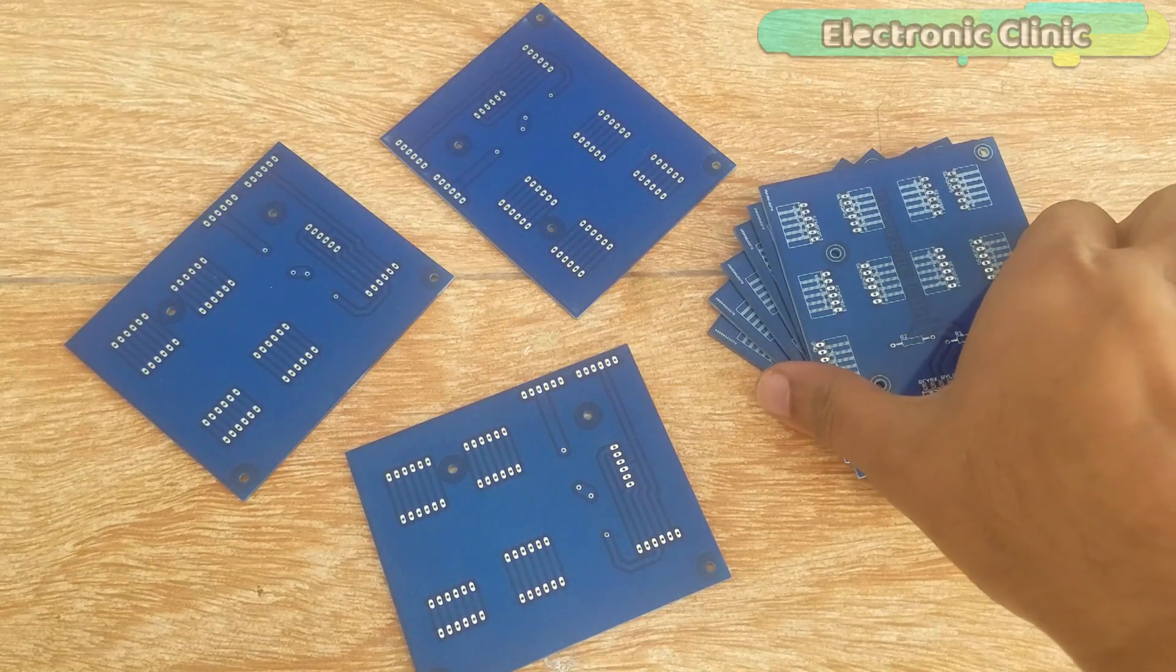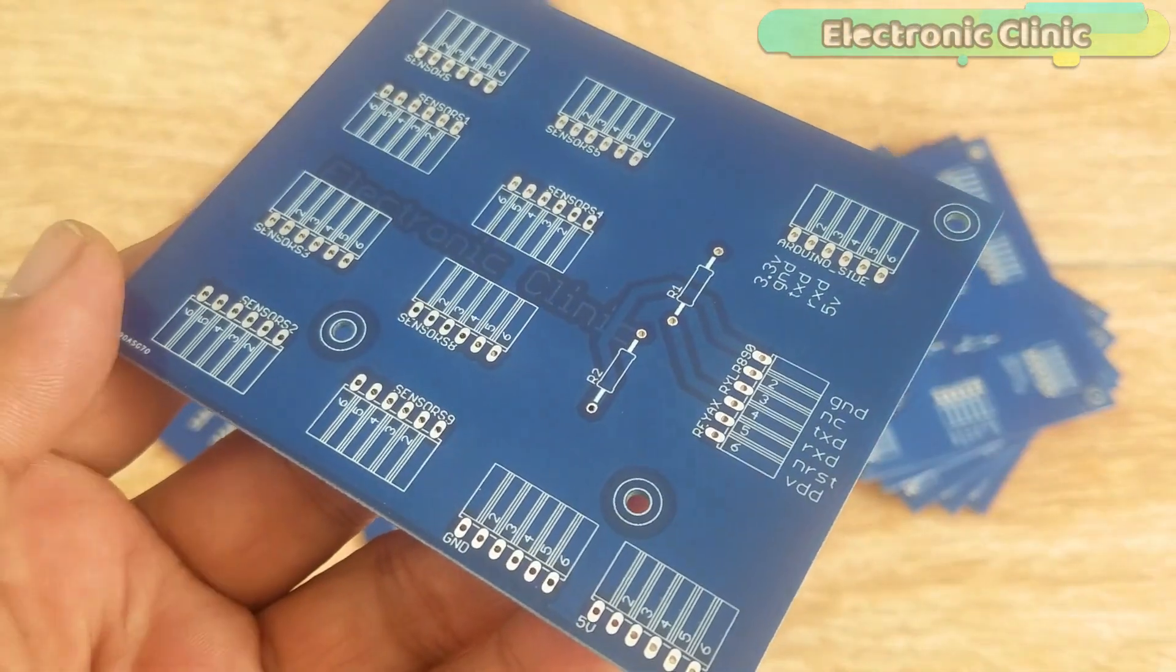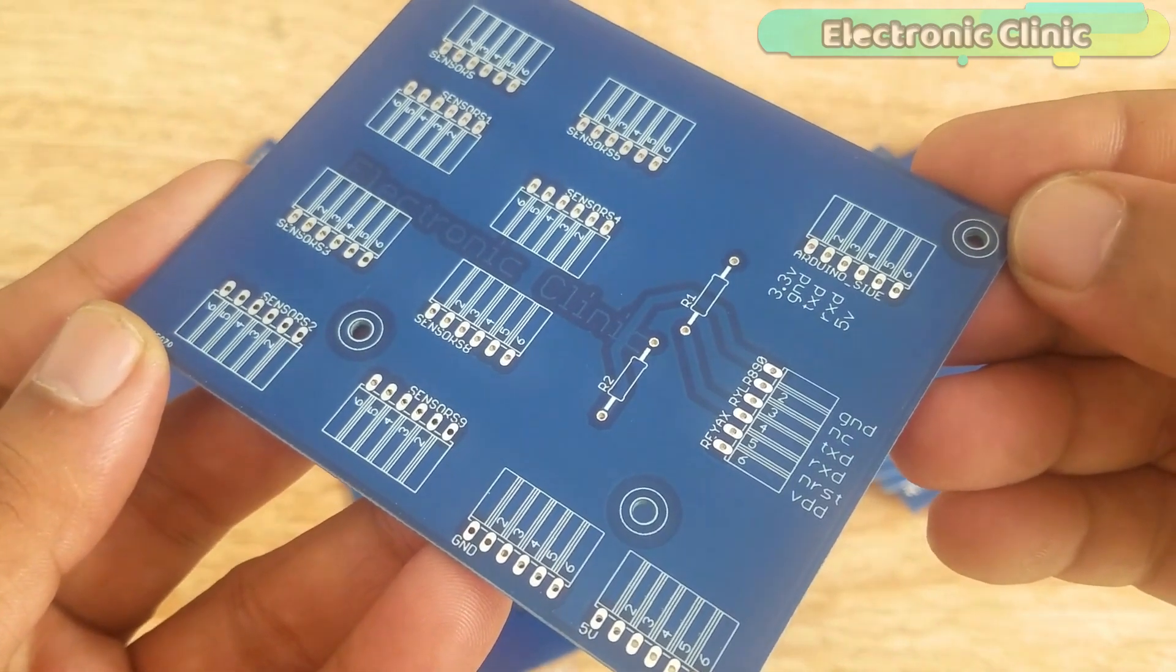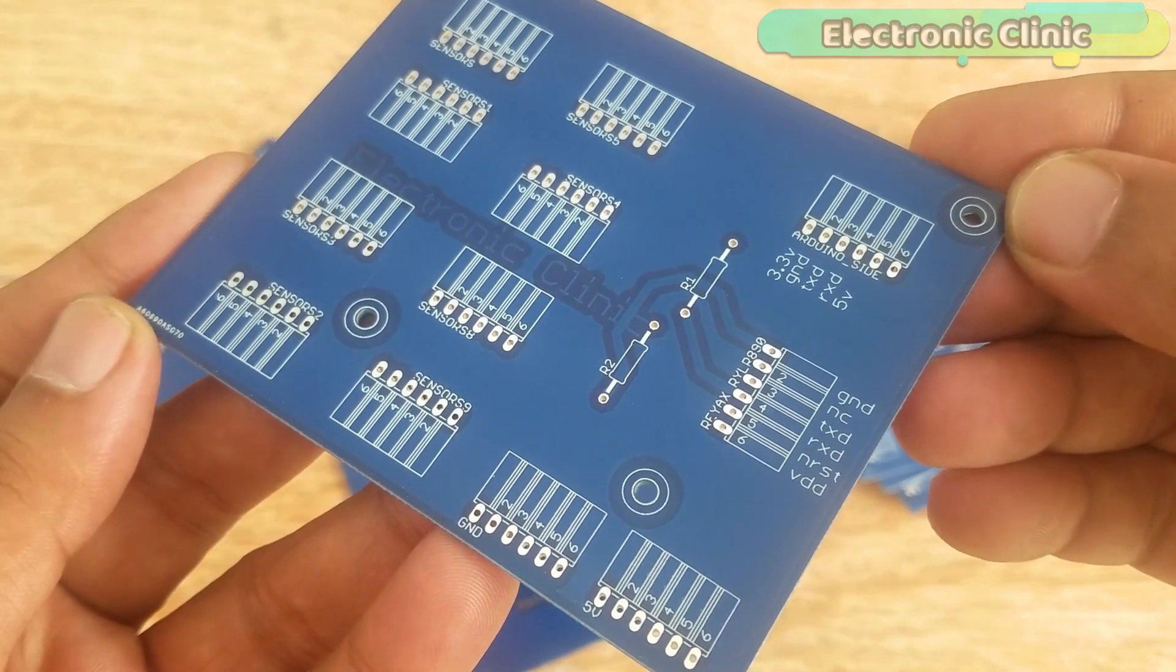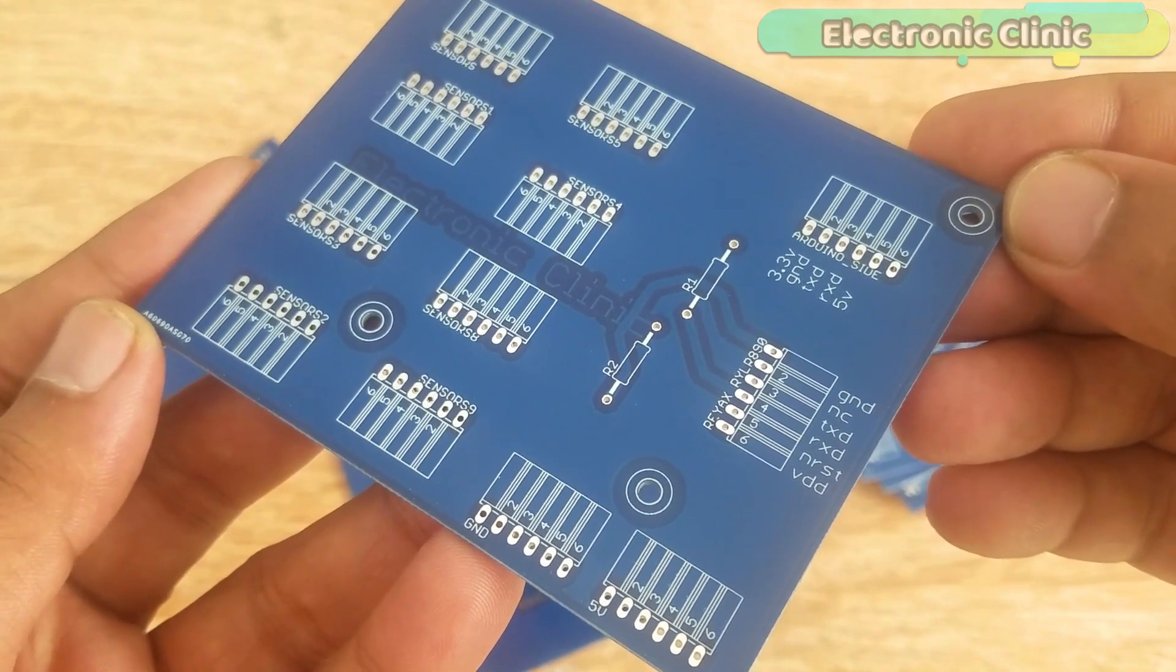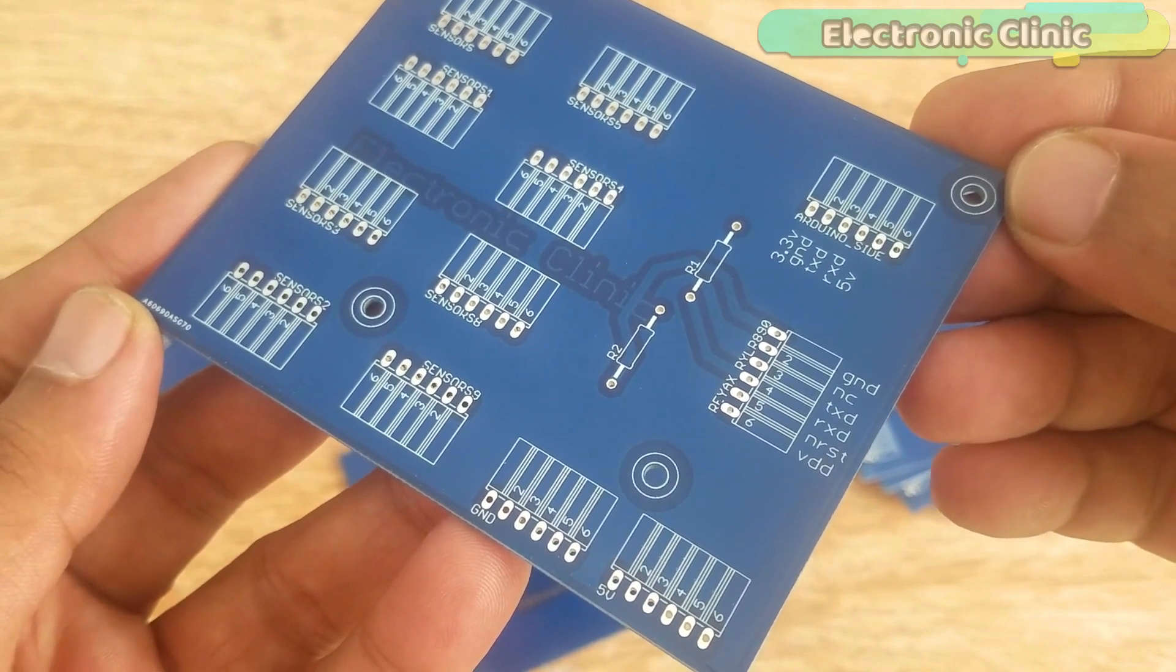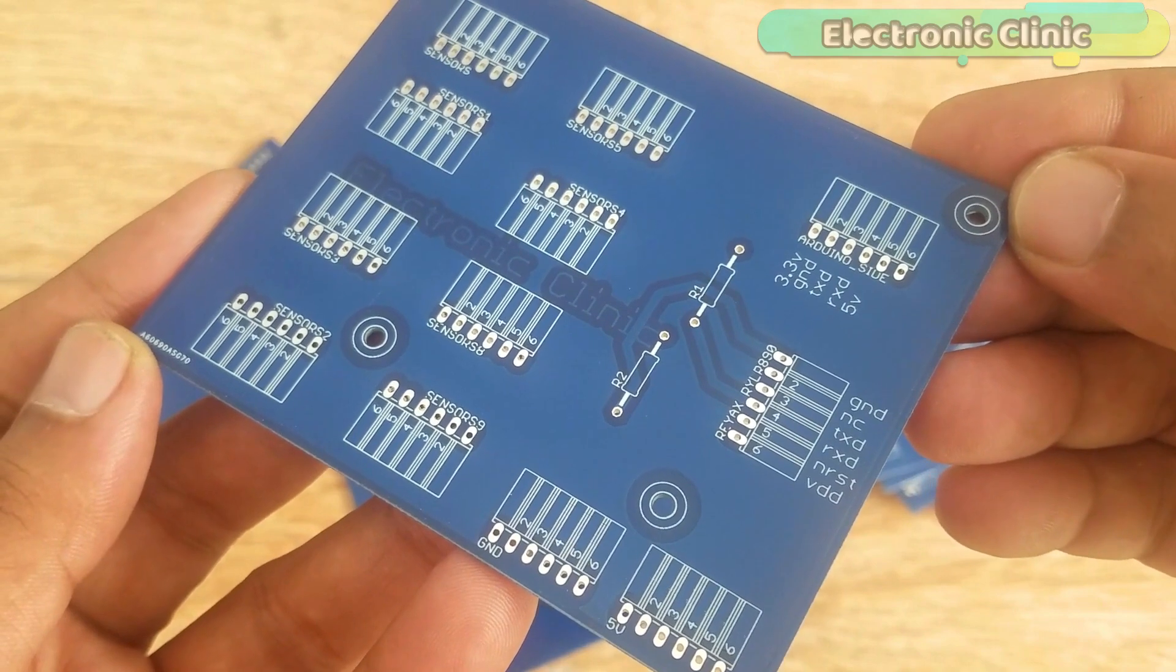These are the PCB boards which I received from the PCBWay company. As you can see the quality is really great and everything is as per the order. The silk screen is quite clear. The blue solder mask looks amazing. I'm 100% satisfied with their work. The Gerber files of the PCB can be downloaded from the PCBWay website. You can find the link in the description.